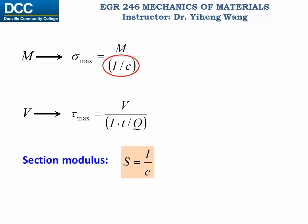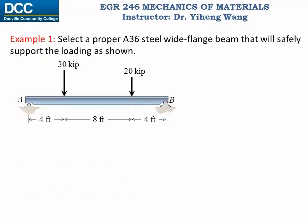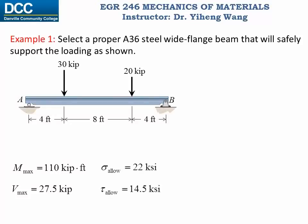In the design process we can derive from the flexure formula that the required section modulus equals the maximum bending moment divided by the allowable normal stress. We determined the maximum internal reactions from the shear and bending moment diagrams, and we look up the material property for A36 steel: the allowable bending stress is 22 KSI and the allowable shear stress is 14.5 KSI. Therefore, the required section modulus is 60 cubic inches.